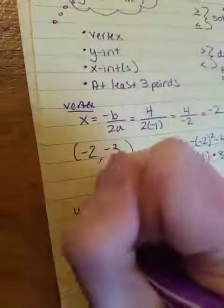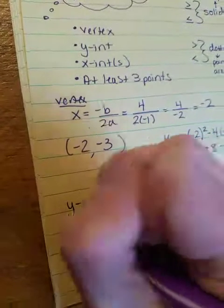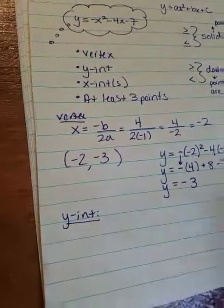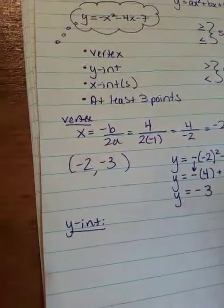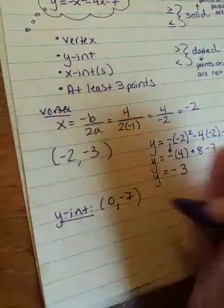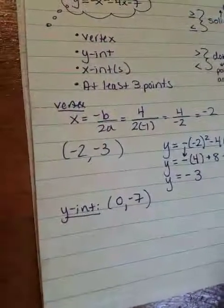Now I need to find the y-intercept. Remember, in standard form, the y-intercept is just your c value. Or some of you like to put 0 in for x and you like to do out the work. It's not necessary. So my c value is negative 7. So my y-intercept is 0, negative 7.